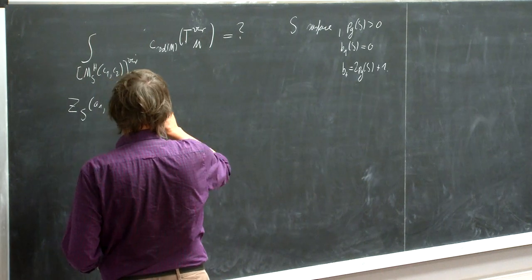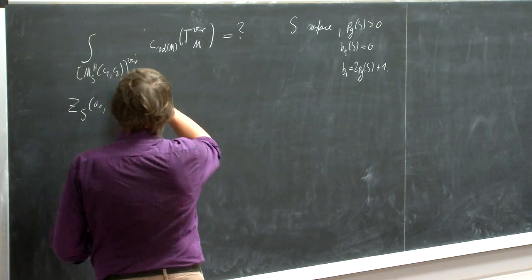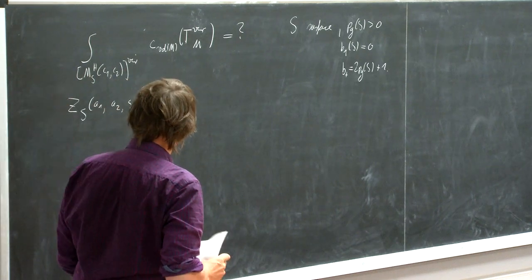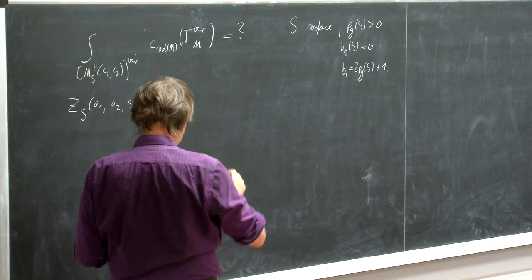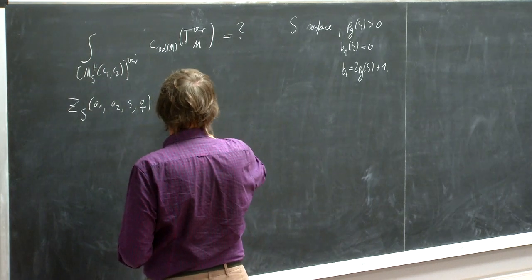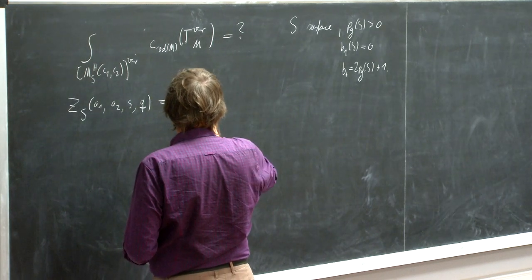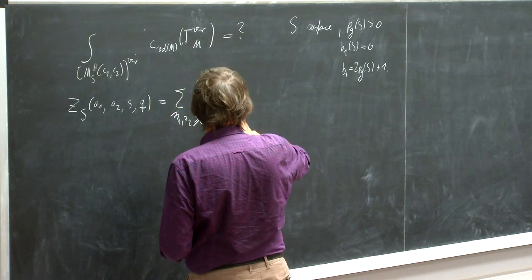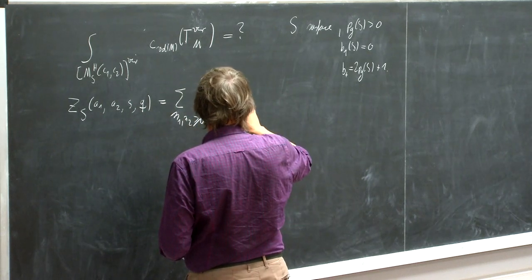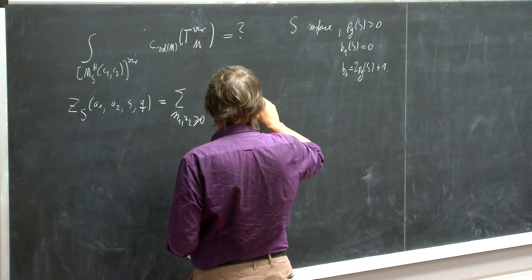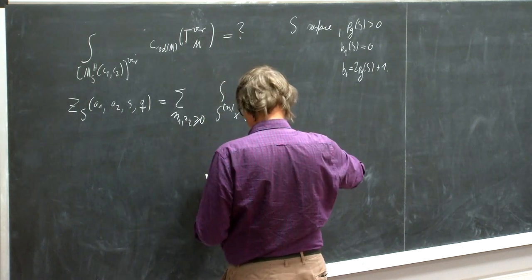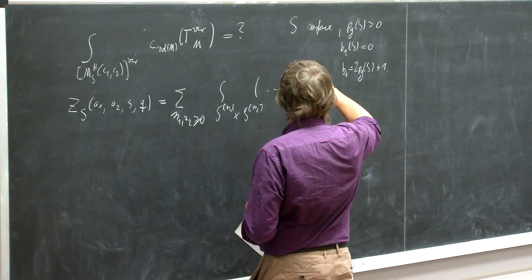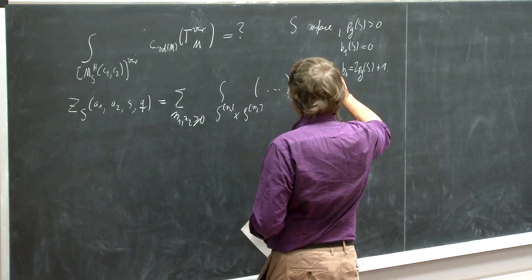So we wanted to compute this. We expressed this in terms of these numbers in terms of this generating function, which were some integrals over Hilbert schemes, of some expression Q to the n1 plus n2.